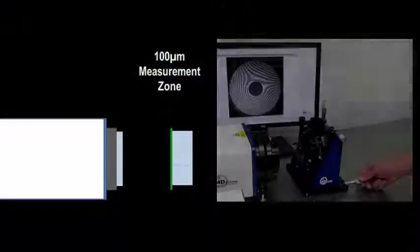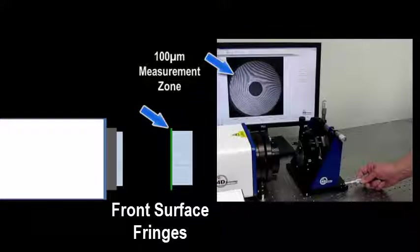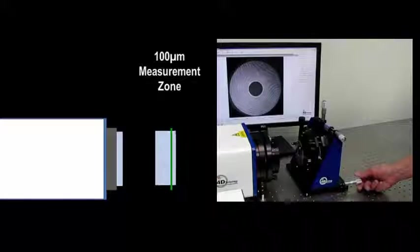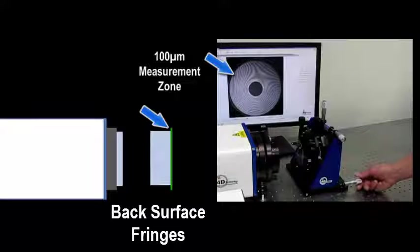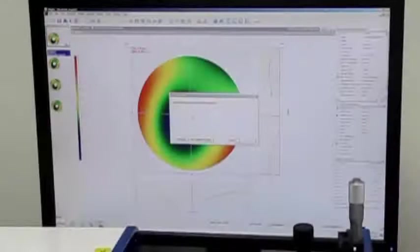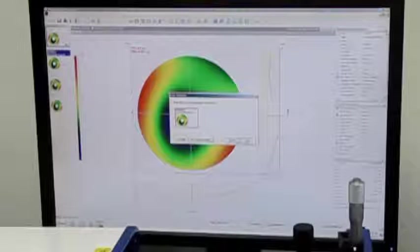The position of the optic determines which surface will be measured. In this example, the front and then the back surface are both measured using the same setup. With both surfaces measured, optical thickness can also be determined.